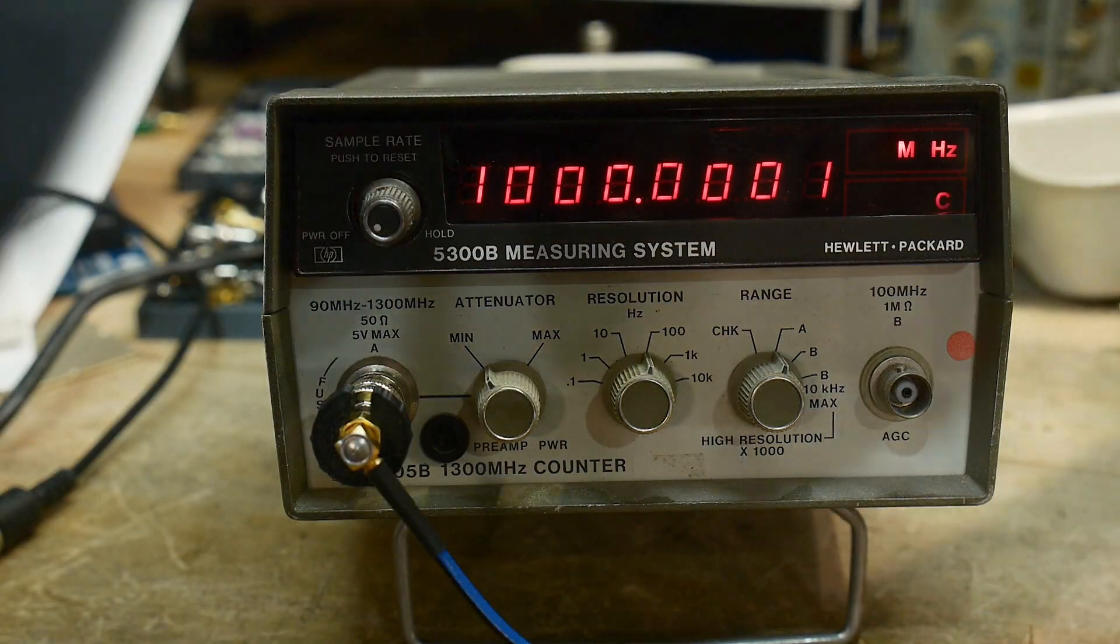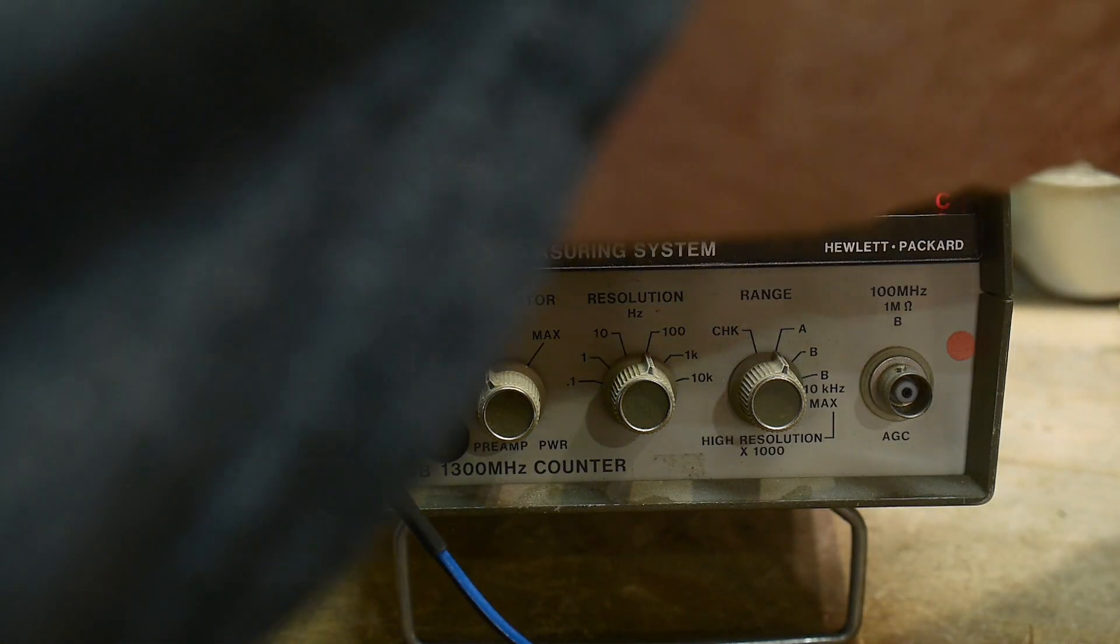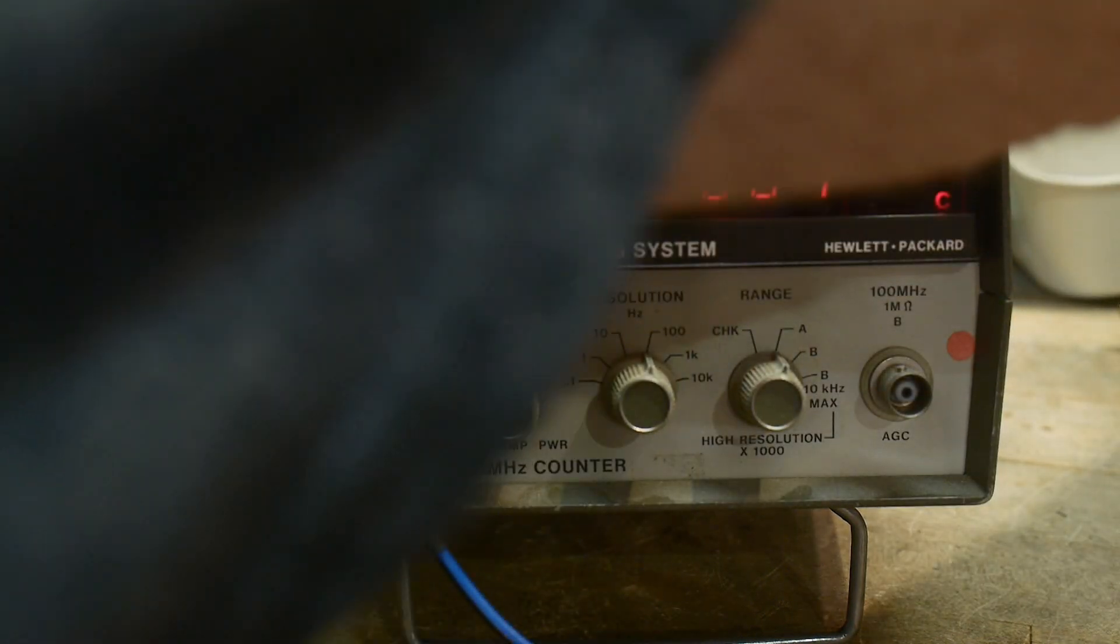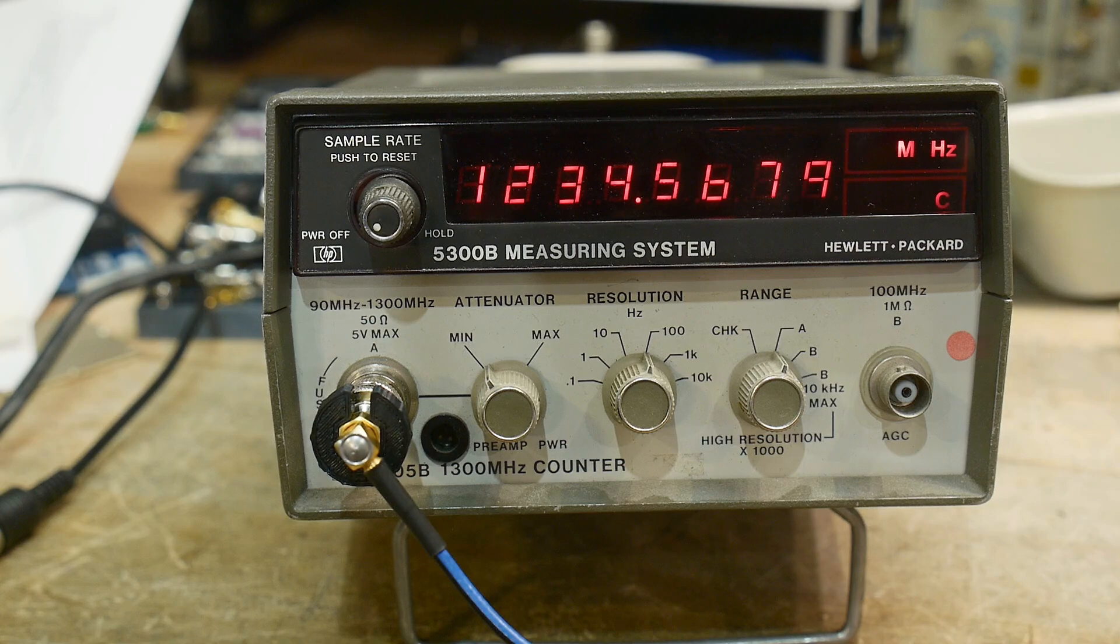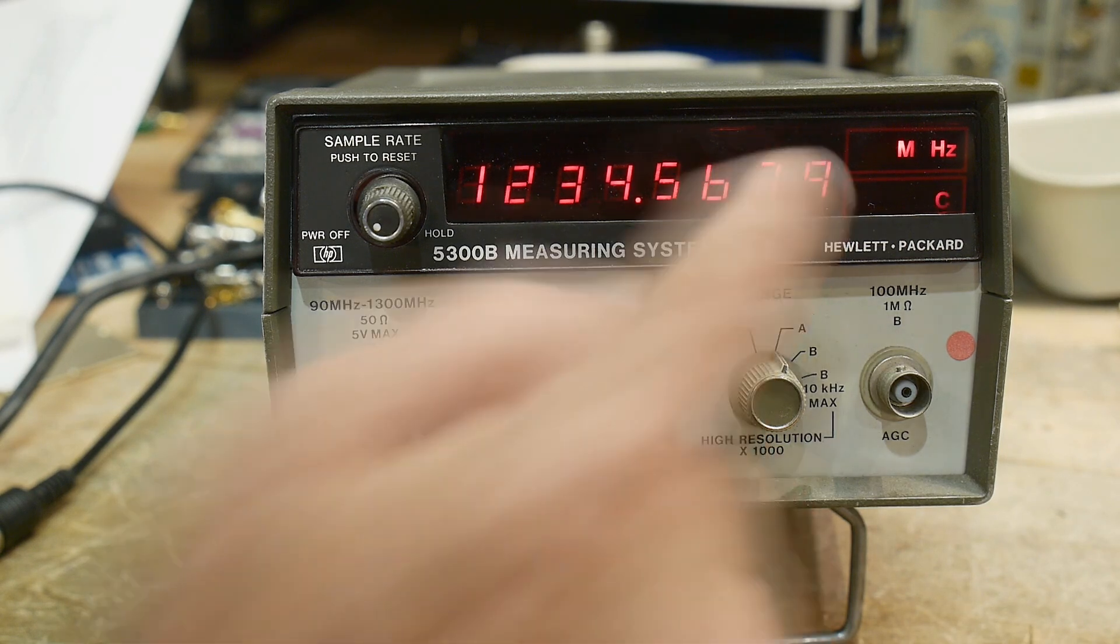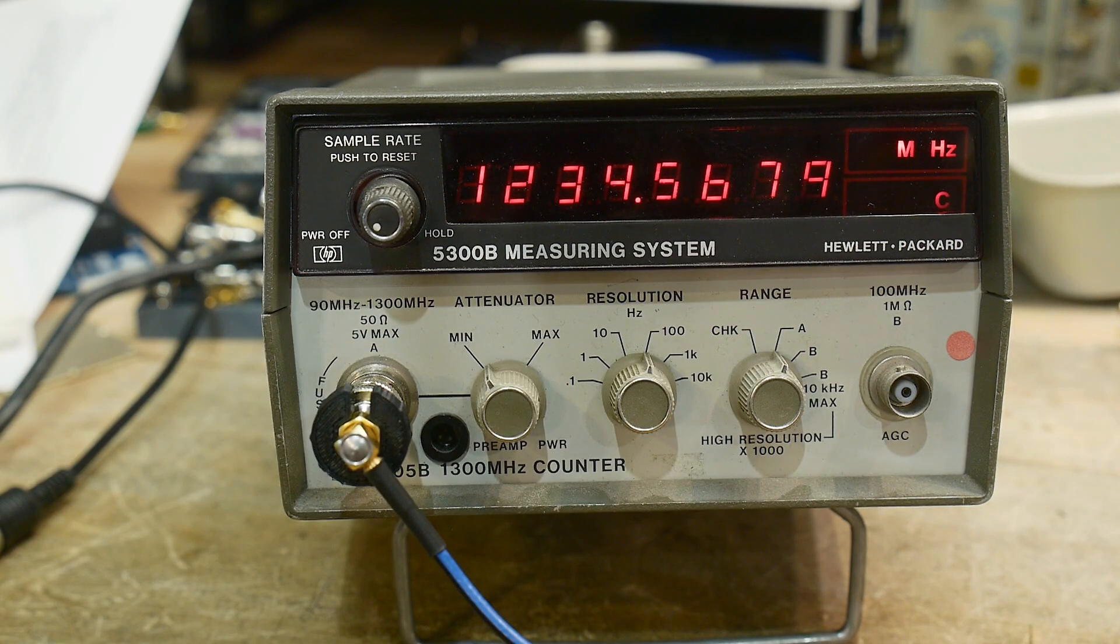Let's set a fun number: one point two three four five six seven eight nine gigahertz. One point two three four five six and seven. Yeah, pretty good.